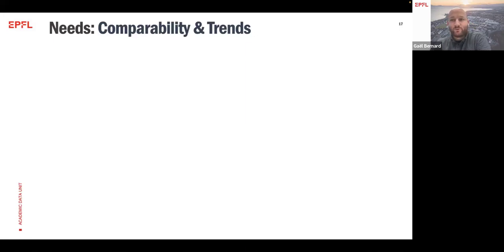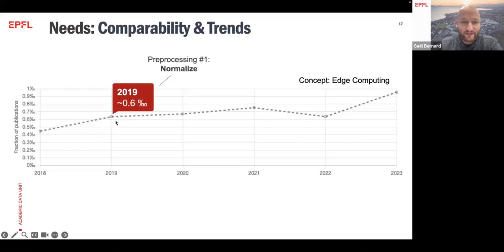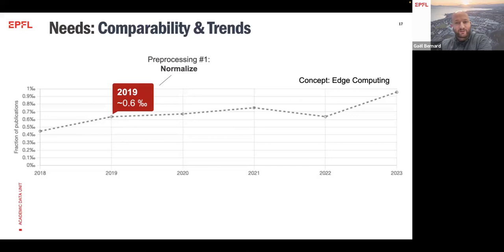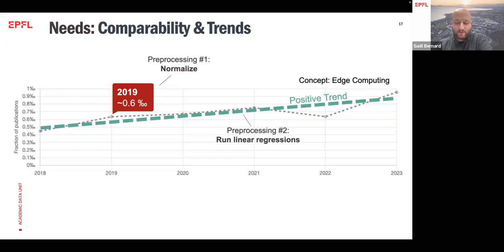The need is really to compare ourselves and also to detect trends. I will briefly describe the pre-processing we are doing on the data. For instance, let's say we have the concept of edge computing. The first pre-computation we have done is to normalize the data, because if you normalize it you can start comparing different years, detect trends, and compare yourself with others. For instance, the concept edge computing is 0.6 per mil publications in 2019. What we have done as pre-processing is to run thousands of linear regressions for every institution and every concept, so that you can list those trends and highlight them in the dashboard.